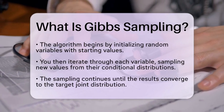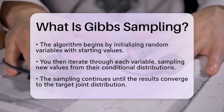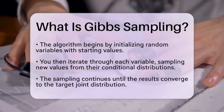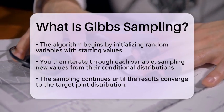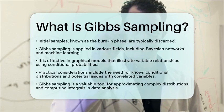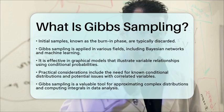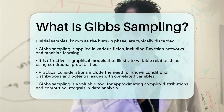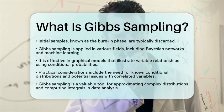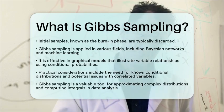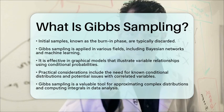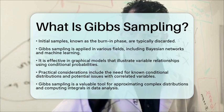When using Gibbs sampling, there are a few practical considerations to keep in mind. First, it requires that the conditional distributions of the variables are known and easy to sample from. This is often the case in conditionally conjugate models. Additionally, if the variables are highly correlated, Gibbs sampling may take longer to converge. However, it excels in high-dimensional spaces where direct sampling from the joint distribution is not practical.